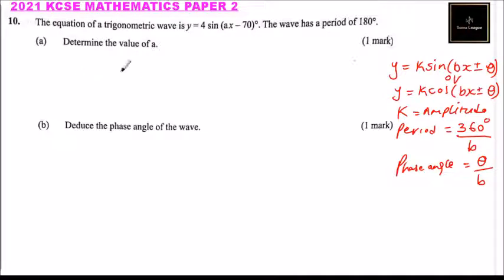Because we have been given the period, we say 180 equals 360 divided by b. In this case, our b is the same as a. So if you cross multiply, a equals 360 degrees divided by 180, which equals 2. That is the value of a.